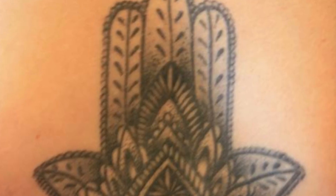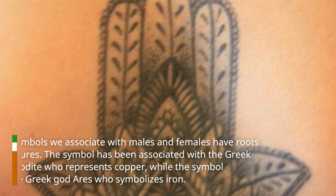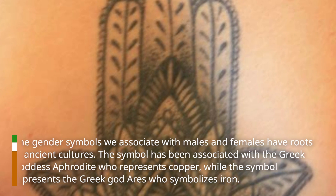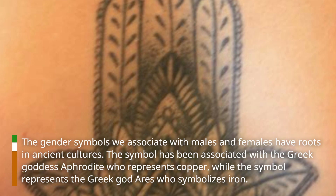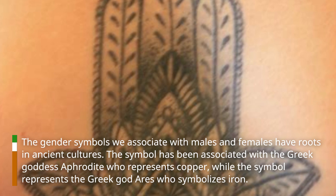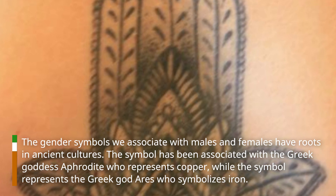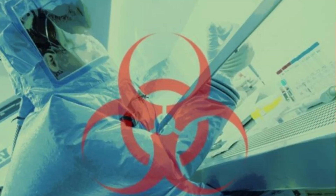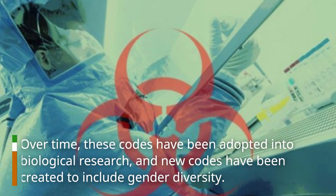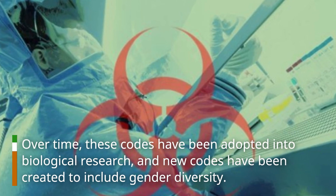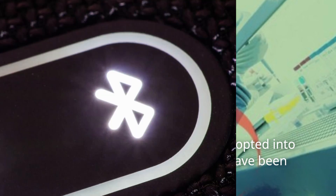The gender symbols we associate with males and females have roots in ancient cultures. The female symbol has been associated with the Greek goddess Aphrodite, who represents copper, while the male symbol represents the Greek god Ares, who symbolizes iron. Over time, these codes have been adopted into biological research, and new codes have been created to include gender diversity.